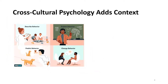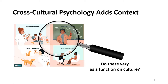Cross-cultural psychology adds on to these general goals of psychology by focusing on context — the context that people live in — and it asks the question: do these variables, or do these things, change as a function of culture?